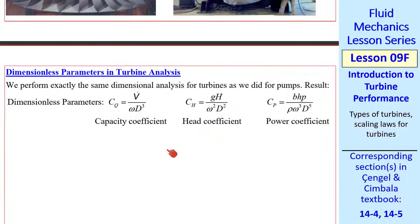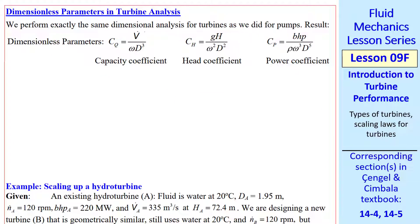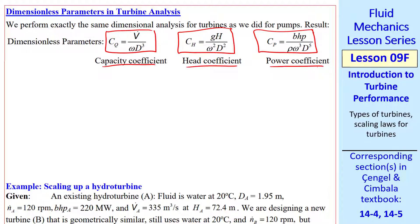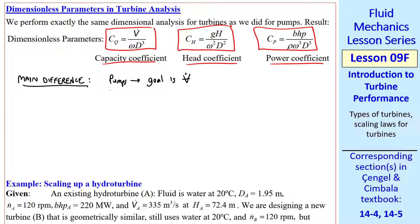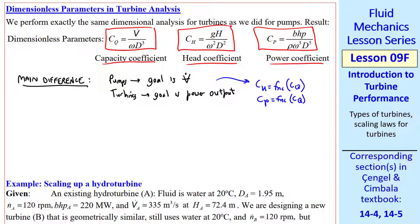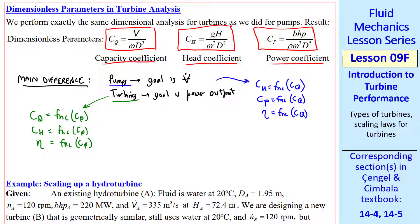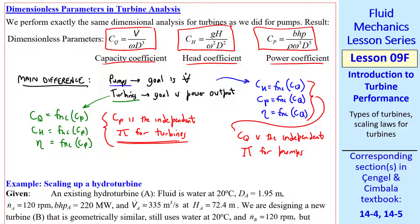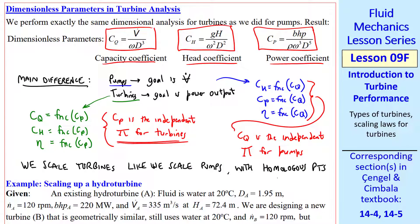Now let's look at dimensional analysis and dimensionless parameters for turbines. The parameters and their names are identical to those for pumps: capacity coefficient CQ, head coefficient CH, and power coefficient CP. The main difference is that for pumps the goal is volume flow rate, whereas for turbines the goal is power output. For pumps, CH = f(CQ), CP = f(CQ), and η = f(CQ). For turbines, since the goal is brake horsepower, we evaluate CQ = f(CP), CH = f(CP), and η = f(CP). In other words, CP is the independent pi for turbines, whereas CQ is the independent pi for pumps. We scale turbines with homologous points, the same procedure except for the change of independent pi.